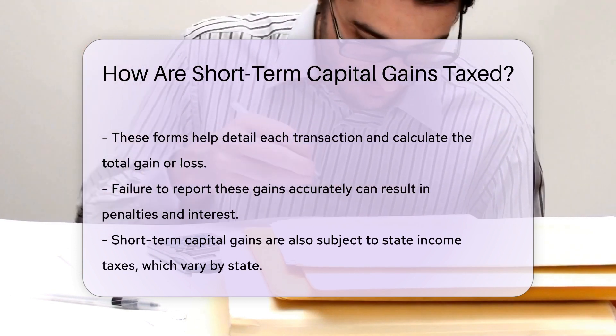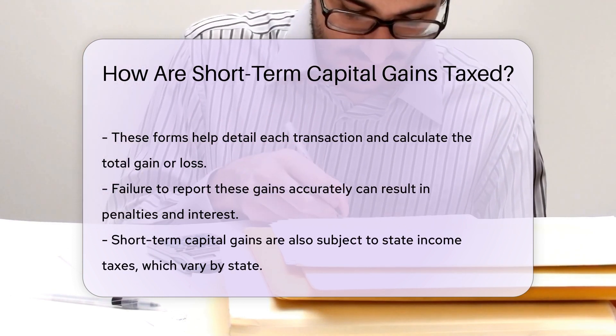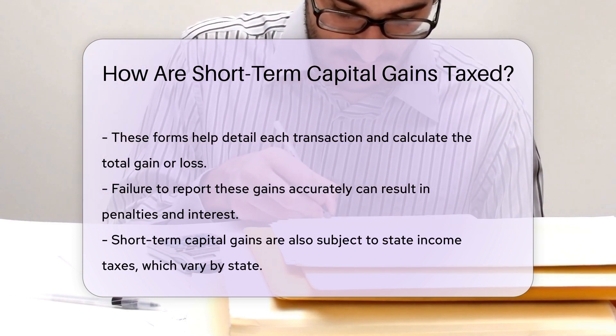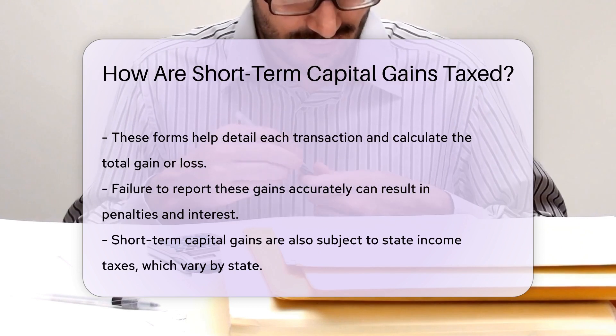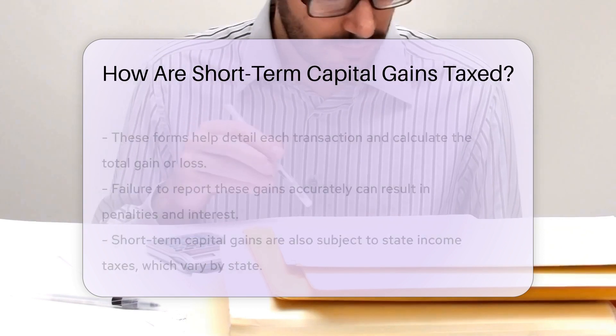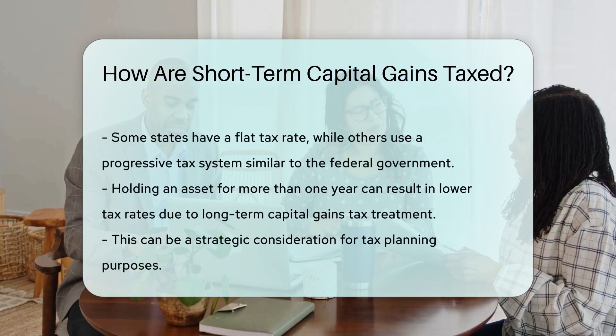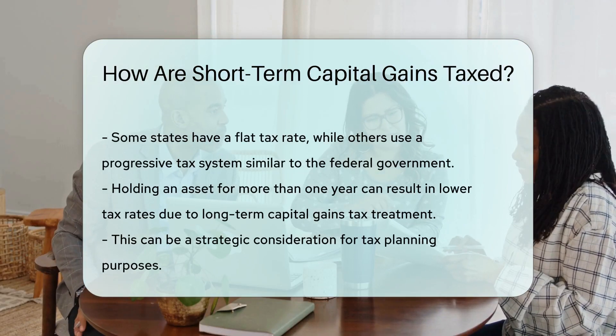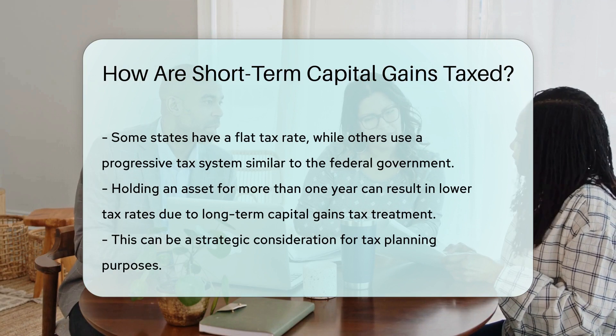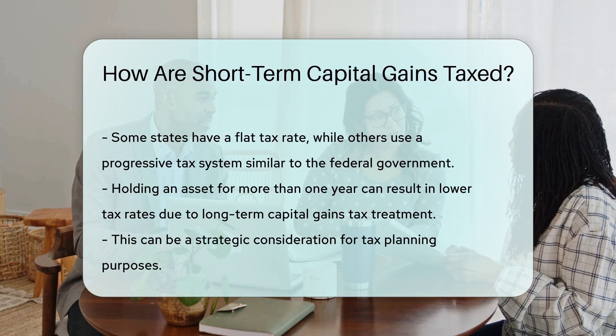Short-term capital gains are also subject to state income taxes, which vary by state. Some states have a flat tax rate, while others use a progressive tax system similar to the federal government.